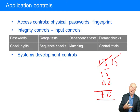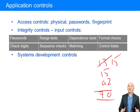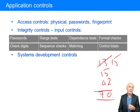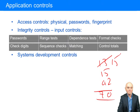Then we have systems development controls, which we've talked about: if you're changing the wages and salaries program, make sure it's changed for legitimate purposes, that it complies with the new tax rules, that it is properly tested, and only after authorization, checking, and testing of the changes will you allow that to be adopted as the new working piece of software.